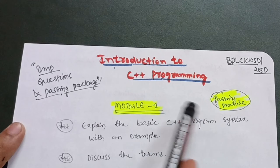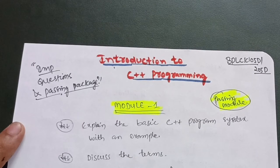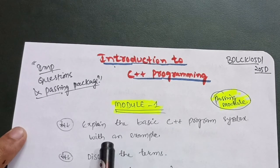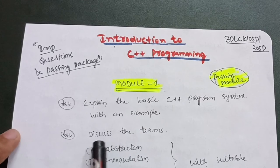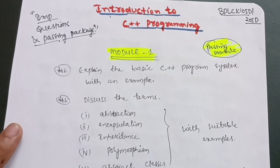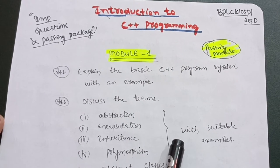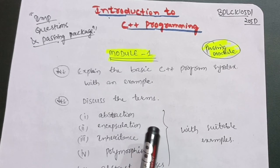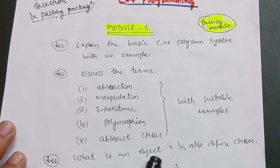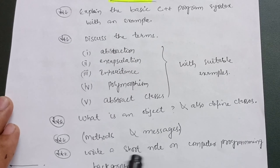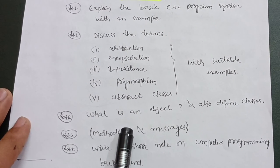Let me start with the passing modules, beginning with Module 1. You only need to cover five questions to easily acquire 20 marks. The first question is: explain the basic C++ program syntax with an example. Next, discuss the terms abstraction, encapsulation, inheritance, polymorphism, and abstract classes — remember that questions will ask you to discuss these with suitable examples. The next question is: what is an object? Also define classes, methods, and messages. Finally, write a short note on computer programming background.